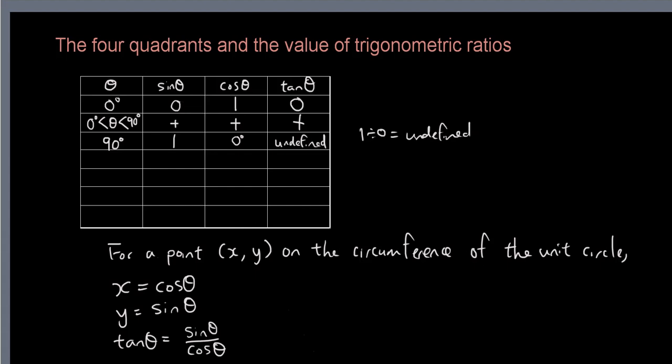Alright, 1 divided by 0 is undefined, whereas before when theta was 0 degrees, we had 0 divided by 1, which is 0. Positive divided by positive is positive.